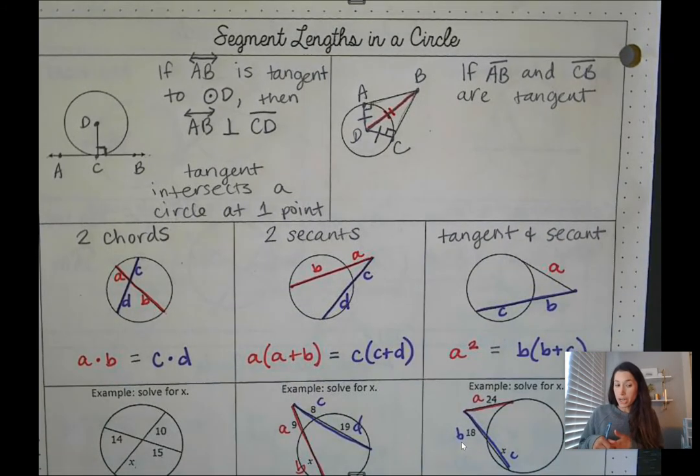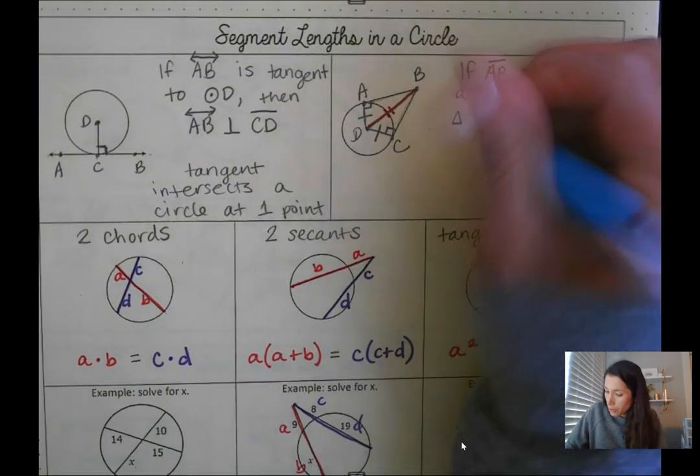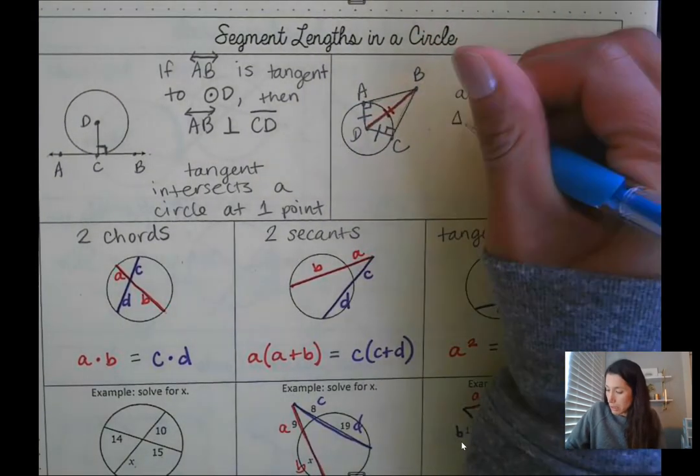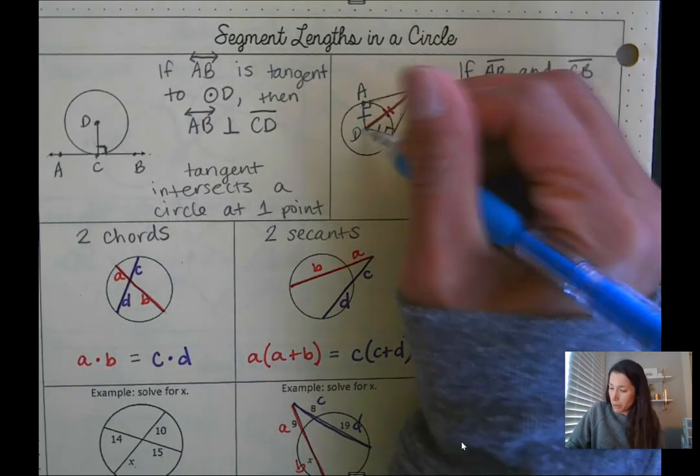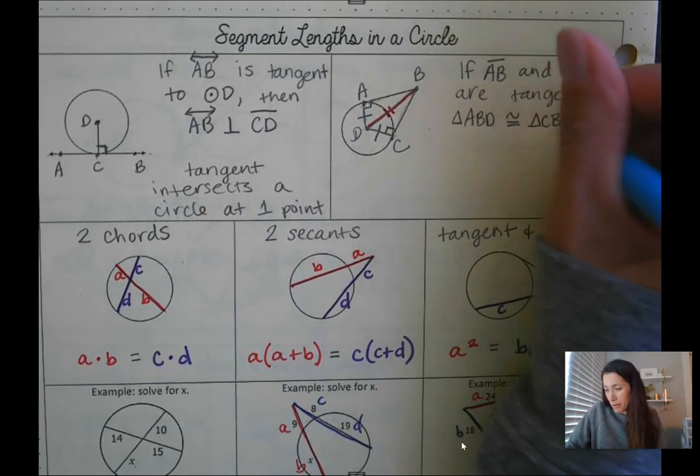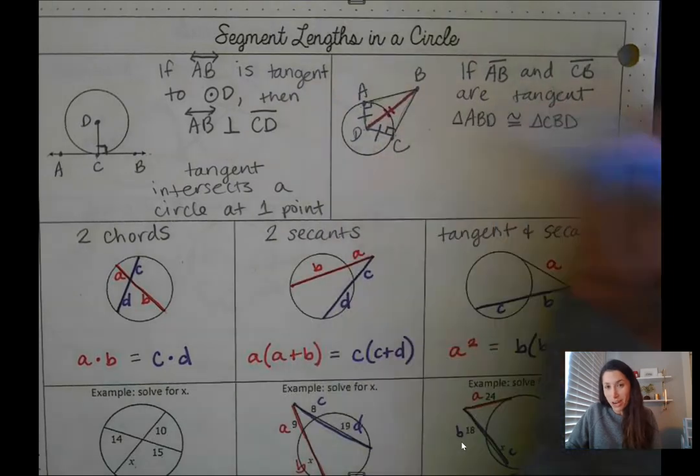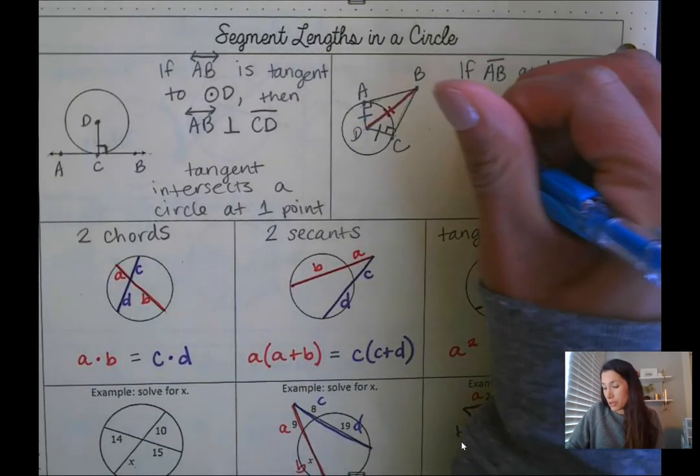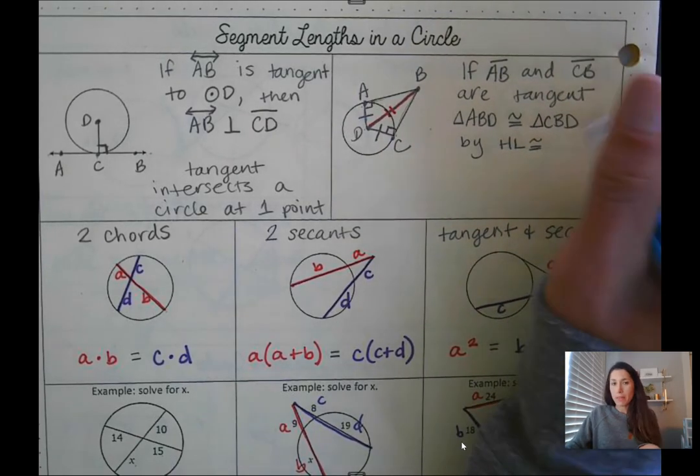So essentially what I just created was two triangles that are congruent. So I can say triangle ABD is congruent to triangle CBD. Remember the triangle congruency reasons: side-side-side, side-angle-side, angle-angle-side, angle-side-angle. Well, the last one is our hypotenuse leg. So these are right triangles. And the reason these triangles are congruent is because of the hypotenuse leg theorem.